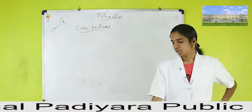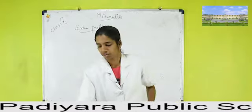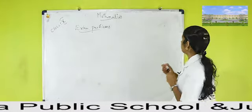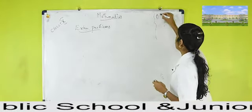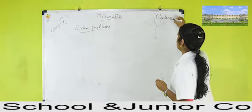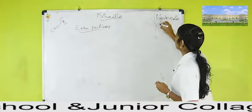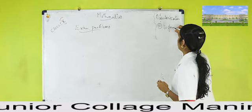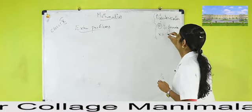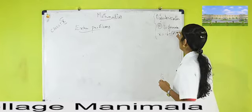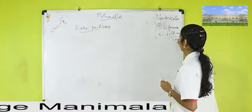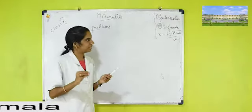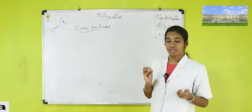So what is actually a quadratic equation? It is of the form ax² + bx + c = 0. We have to solve the quadratic equation by using two methods. The first method is known as factorization, and the second method is by using the quadratic formula.